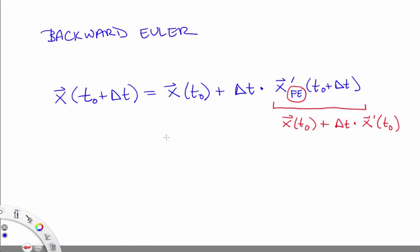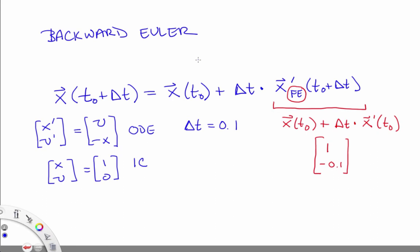I'm going to go through an example from the same initial condition with the same ODE that we just did with forward Euler and show you how this works. We did this before. We know what the result of taking one forward Euler step forward under the influence of that dynamics from that initial condition with that time step. That's the value over there, 1, negative 0.1.